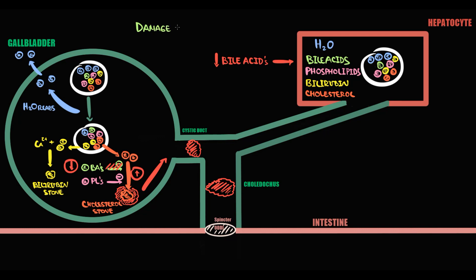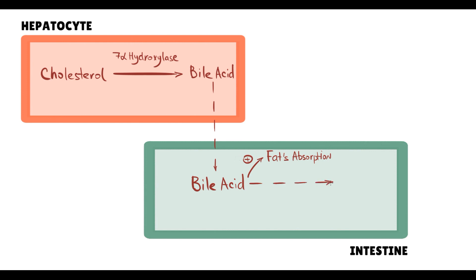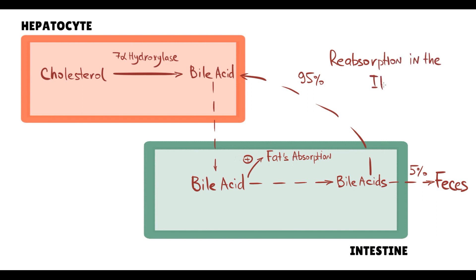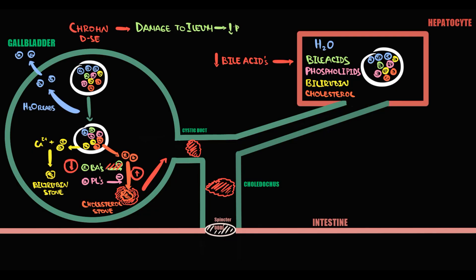Another risk factor that can cause decreasing bile acids level is damage or resection of the ileum, typically caused by Crohn's disease. In normal conditions, after the duodenum, bile acids come into the ileum where approximately 95% of them undergo absorption into the blood, then come back to hepatocytes, which again secrete them into the bile — we call this enterohepatic circulation. But if damage to the ileum occurs, the absorption of bile acids decreases. With decreasing absorption, fewer bile acids return to hepatocytes, and as a result hepatocytes secrete lesser amounts of bile acids into the bile.